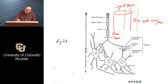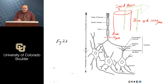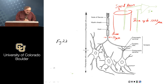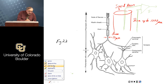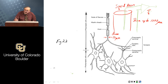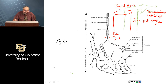Hodgkin and Huxley, in the late 1930s, simply looked at the difference in potential between the inside and outside. The voltage you get is referred to as a transmembrane potential, typically denoted as V sub M — a voltage across the membrane.